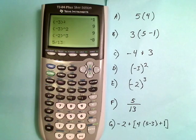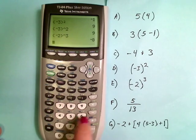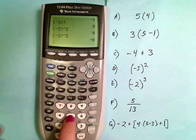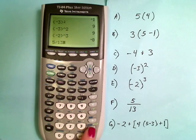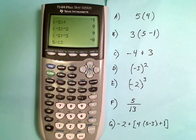All right, so here I have a fraction, 5/13. So to enter fractions, you just use the division sign. So 5 divided by 13 is the same thing as 5/13. Now I have the older operating system on my TI-84 Plus. If you have the newer operating system, using this division sign will actually make things look like a fraction.